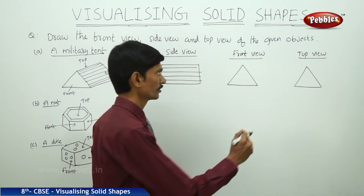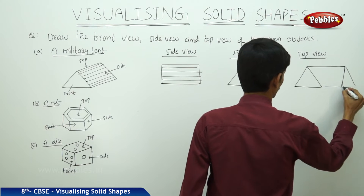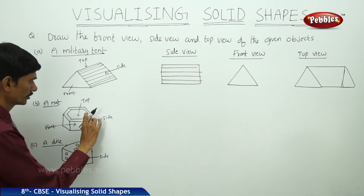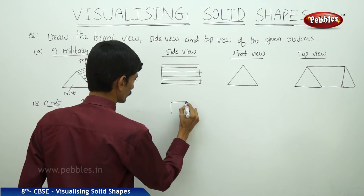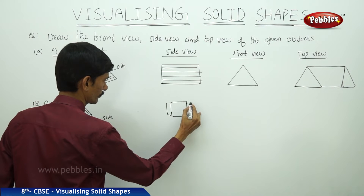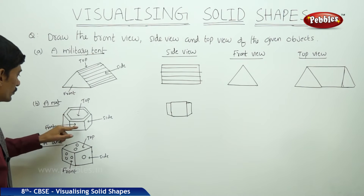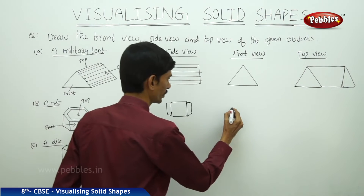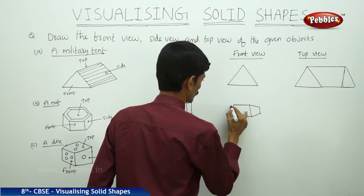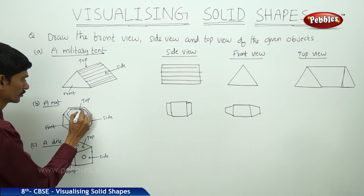For the second case, a nut is given. The side view of the nut gives a square. The front view shows a square with two side squares. From the top, we can observe a hexagonal shape.